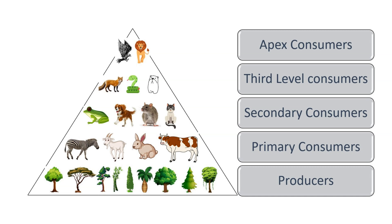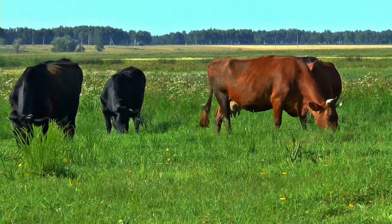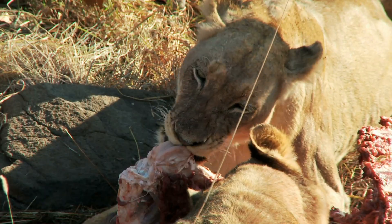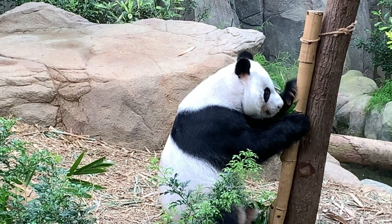Food consumers, like animals, cannot make their own food. They depend on plants or other organisms for energy. Some animals are herbivores, eating only plants, while others are carnivores or omnivores, consuming both plants and animals. Herbivores, like rabbits and cows, feast on plants, while carnivores, such as lions and eagles, dine on other animals.